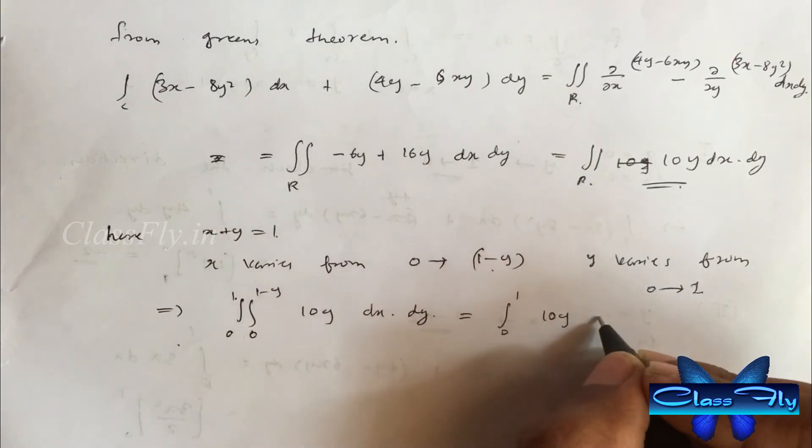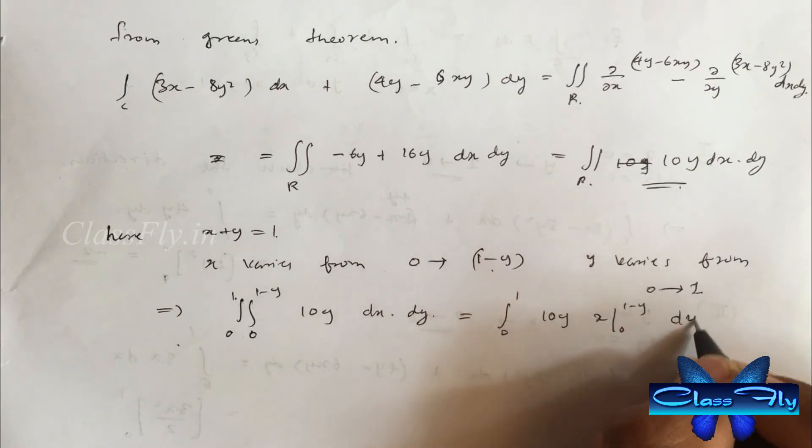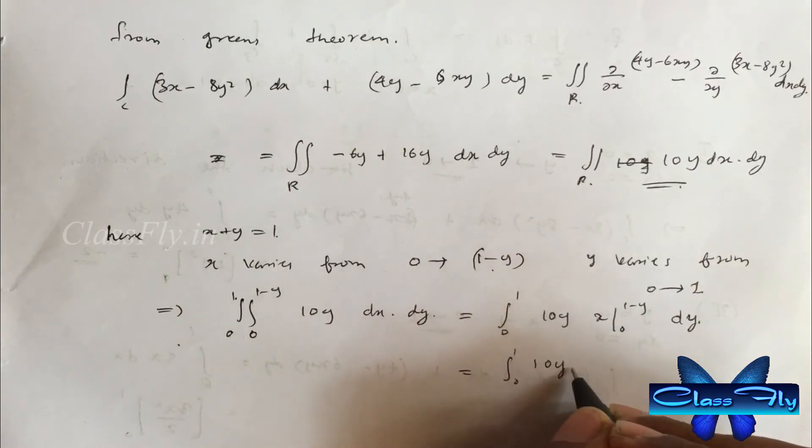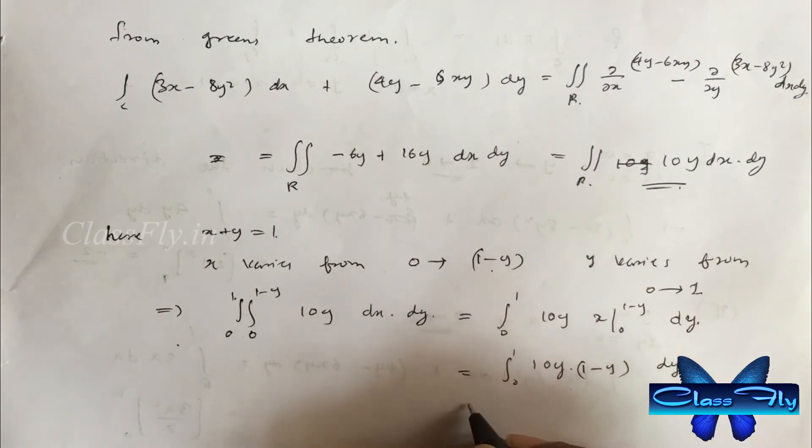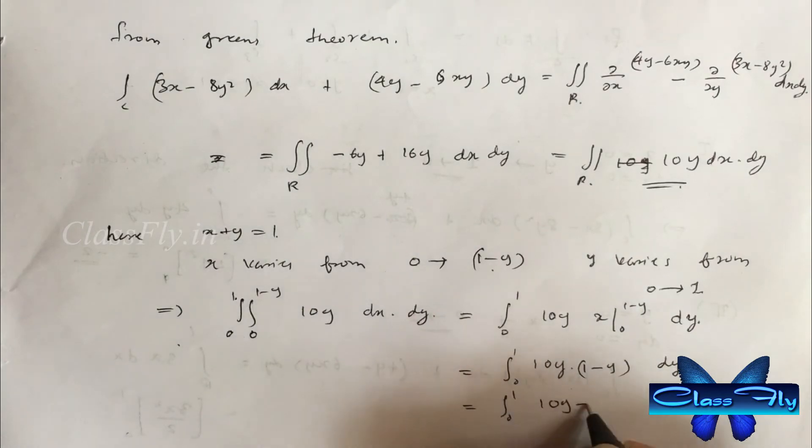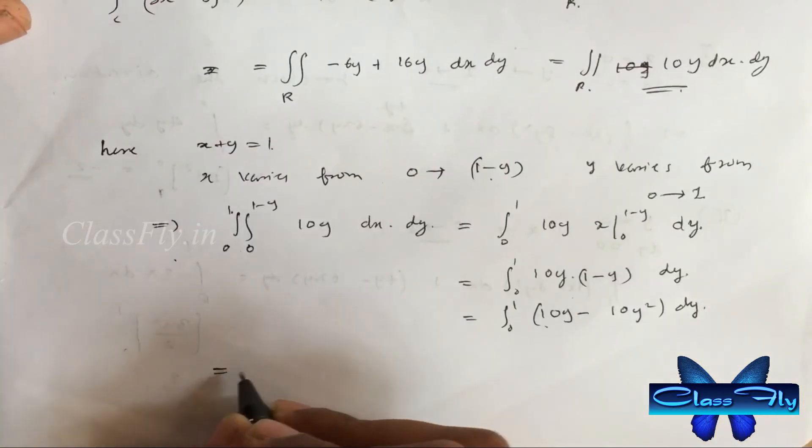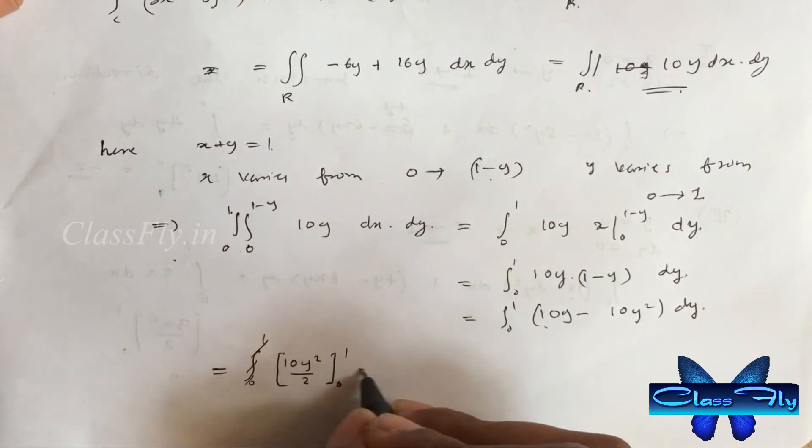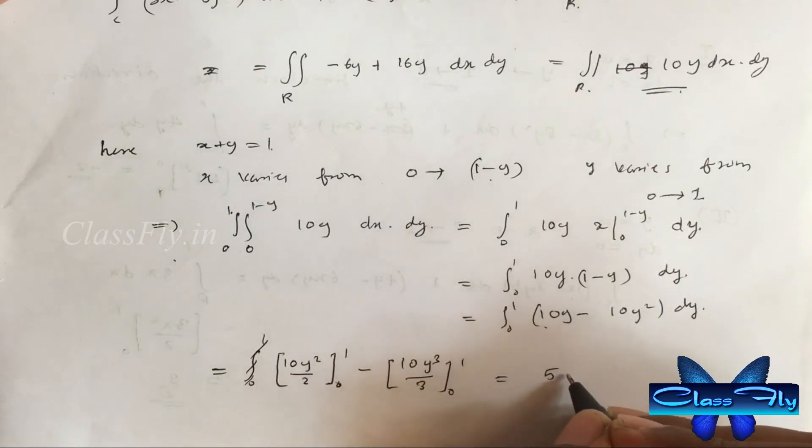Integral 0 to 1, integral 0 to 1 minus y, 10y dx dy. And after integrating and applying the limits, we get the same answer 5 by 3. Hence, Green's theorem has been verified.